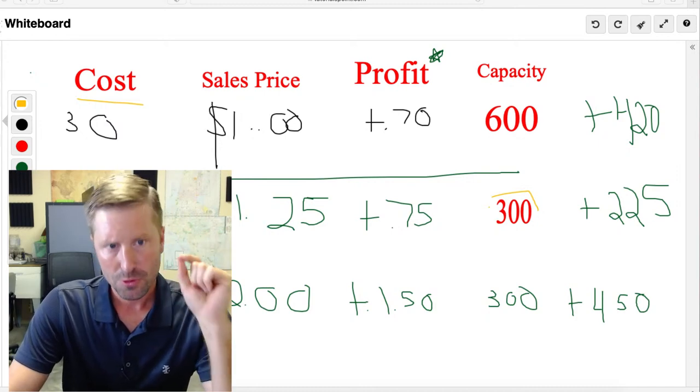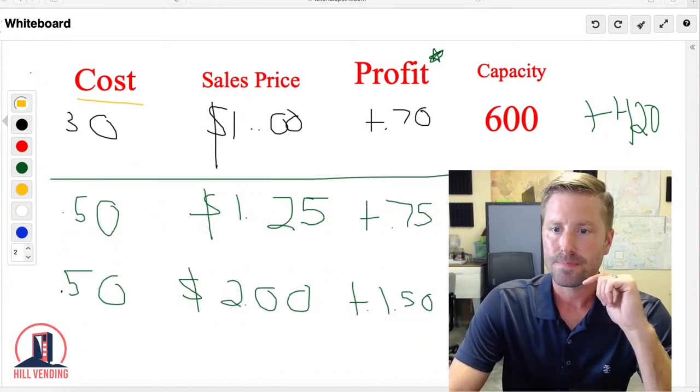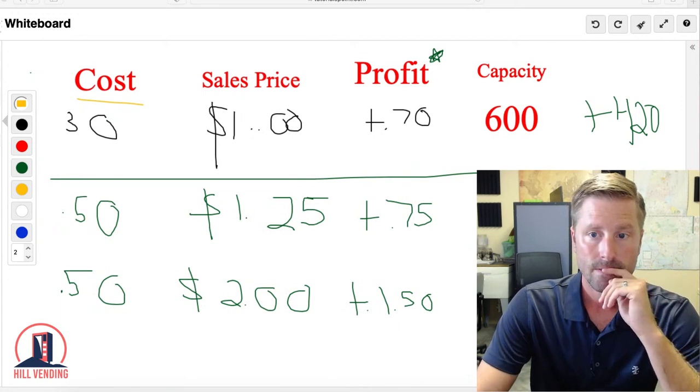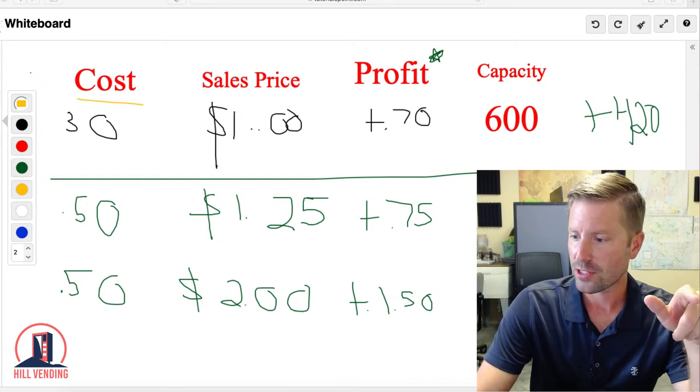Because what you have to remember is when you are vending cans and bottles, bottles really can only go two deep. Cans in a 721, you can put four deep. Bottles, two deep. So obviously you're cutting down the capacity of that machine a lot.